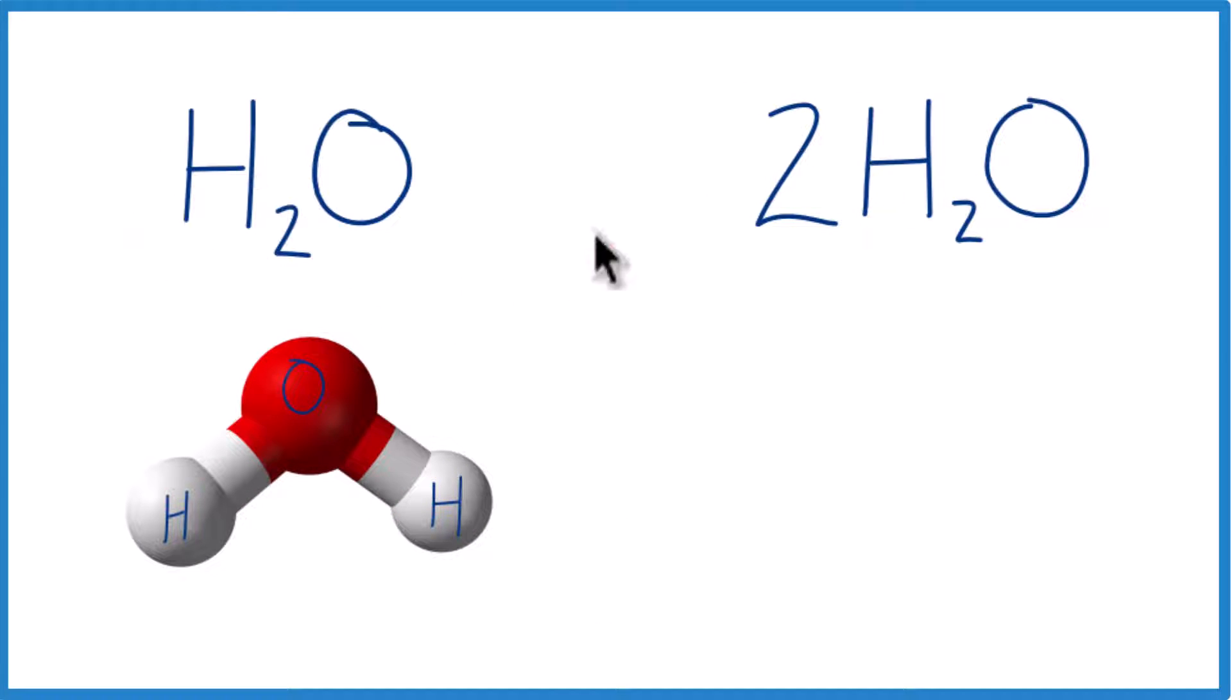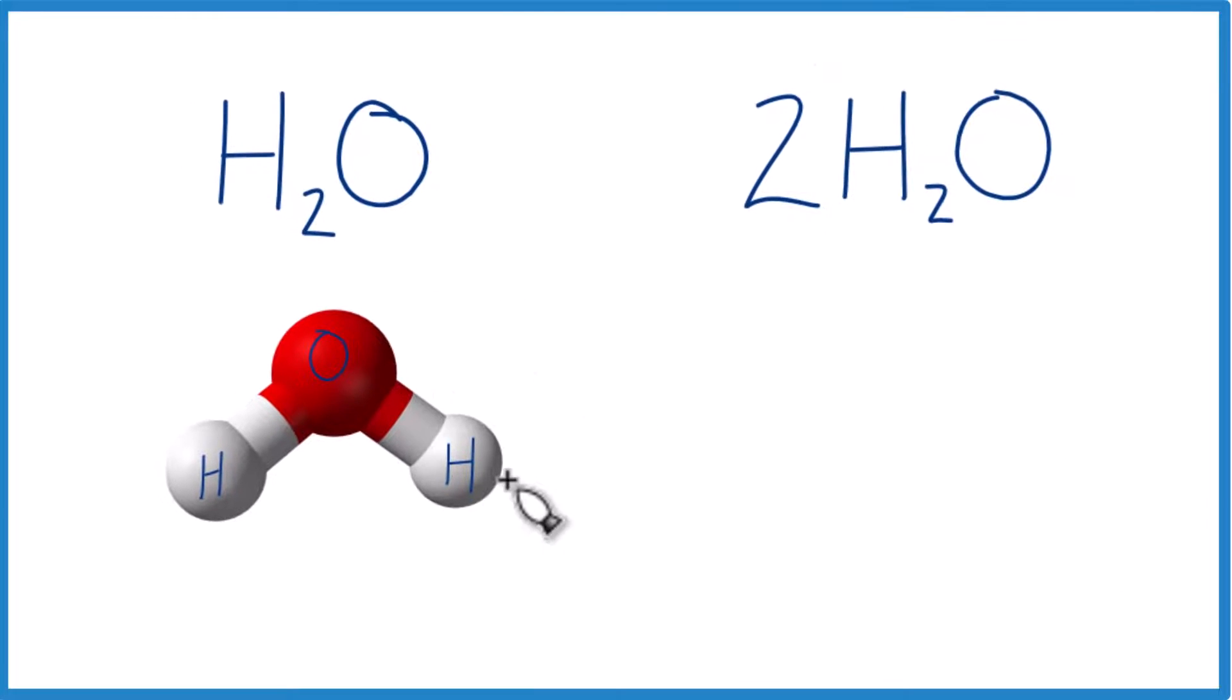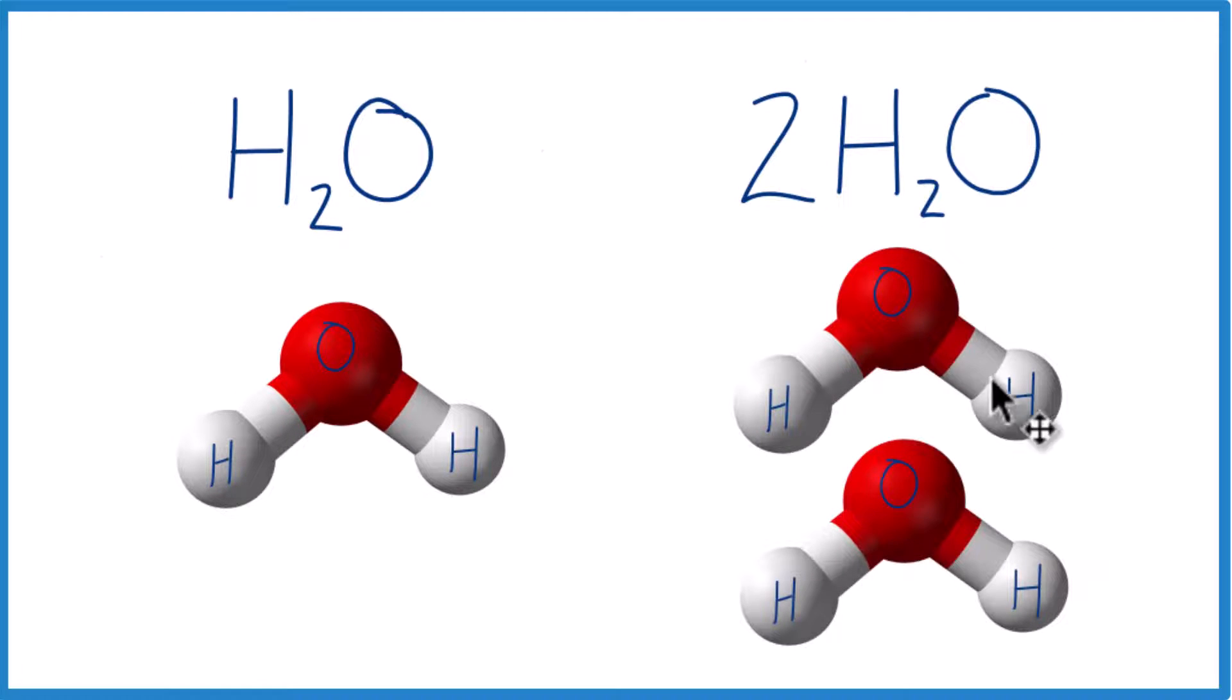So instead of having one H2O, over here we have two H2O. This two, you could think of parentheses here, although we don't write them. We have two of these molecules here. And they're not bonded together. We have two water molecules, two H2O, two separate water molecules.